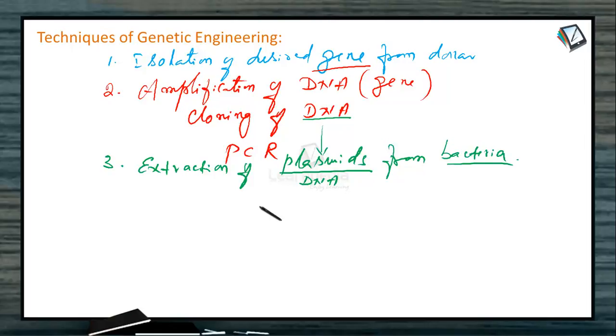That is why these plasmids are referred to as plasmid vectors. So, the next technique is construction of rDNA, that is recombinant DNA.